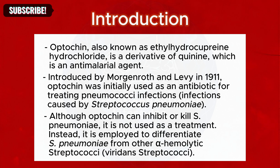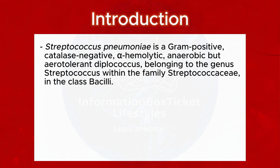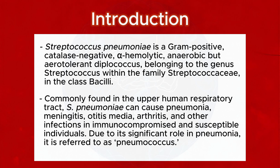Although Optochin can inhibit or kill S. pneumoniae, it is not used as a treatment. Instead, it is employed to differentiate S. pneumoniae from other alpha-hemolytic streptococci — viridans streptococci. Streptococcus pneumoniae is a gram-positive, catalase-negative, alpha-hemolytic, anaerobic but aerotolerant diplococcus, belonging to the genus Streptococcus within the family Streptococcaceae in the class Bacilli.